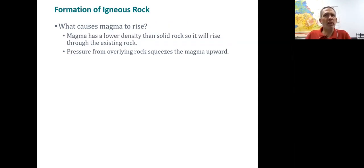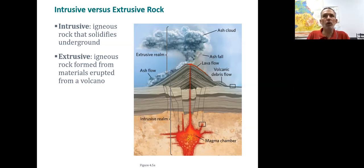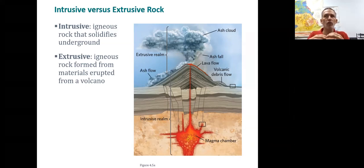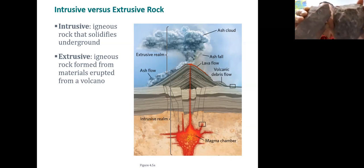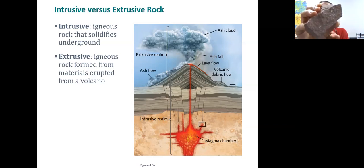What causes magma to rise? One thing is a lack of overlying pressure. If we have a plate pulling apart, lava is going to be allowed to rise up. If the rock cools in the ground, it cools much slower and has more time for minerals to form, so rocks that cool in the ground tend to have larger crystals. These two samples have the exact same chemical composition — one cooled in the ground with visible individual grains, and the other cooled closer to the Earth's surface without time for those grains to form.